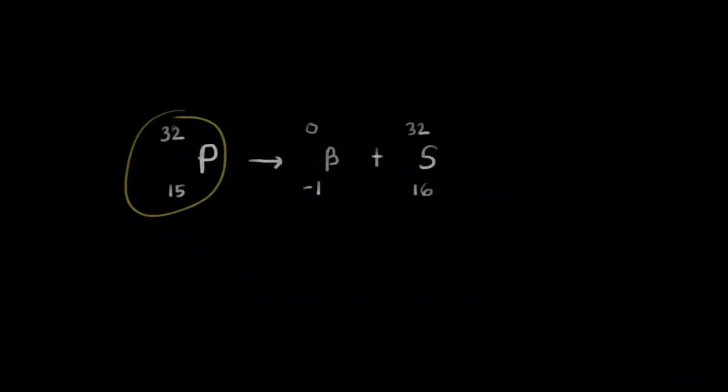Phosphorus-32 is radioactive and undergoes beta decay. We talked about beta decay in the last video. Here's our beta particle, and the phosphorus is going to turn into sulfur.